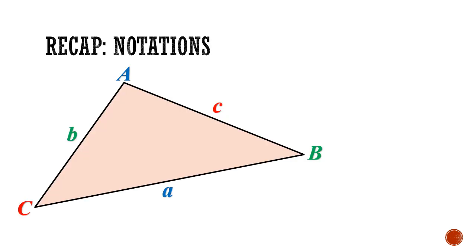Let's begin with a recap of the notations. In the last lesson, we learned that side A is the side opposite angle A, side B is the side opposite angle B, and side C is the side opposite angle C.